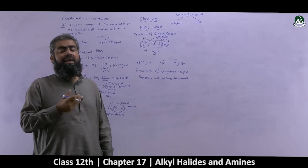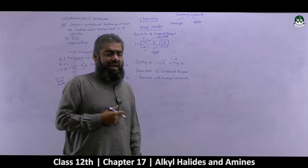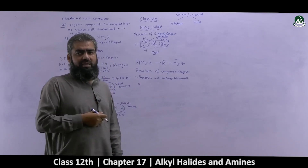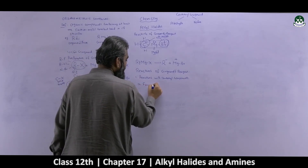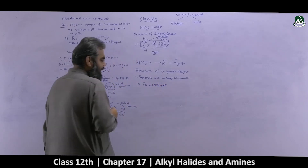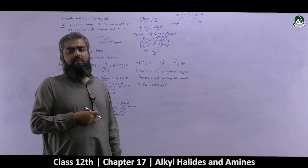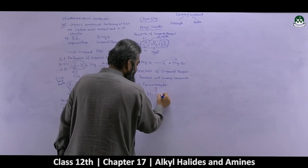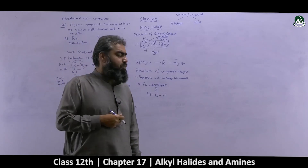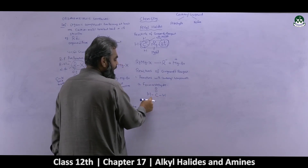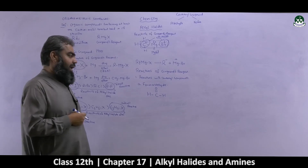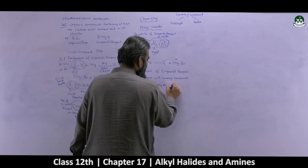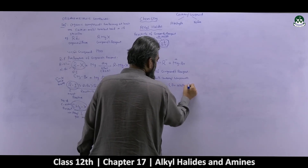Which alcohol molecule is produced depends on which carbonyl compound you have combined. First, we look at the reaction of Grignard's reagent with formaldehyde. Formaldehyde is the simplest aldehyde molecule — the smallest aldehyde in the homologous series — where the aldehyde functional group is attached to a hydrogen. It is generally used for the preparation of primary alcohols.